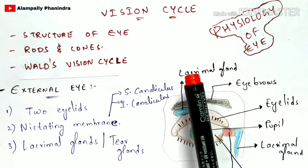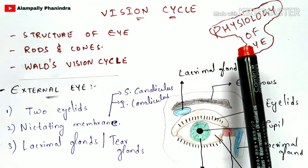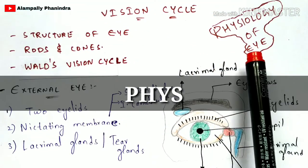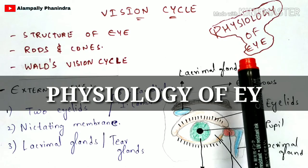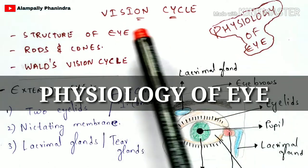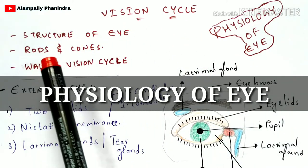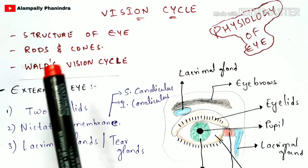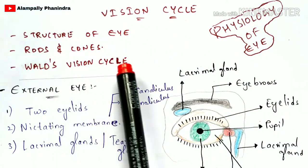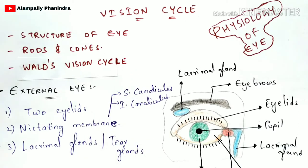So in this video, I am going to explain you about physiology of eye. This video includes vision cycle, structure of eye, rods and cones, Wald's vision cycle, and it also includes hyperpolarization.